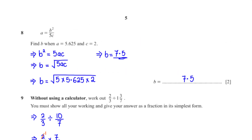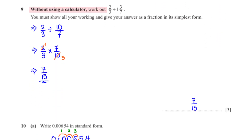A equals b squared over 5c. Find b when a equals 5.625 and c equals 2. First, rearrange to make b the subject: multiply both sides by 5c, then take the square root of both sides, giving b equals the square root of 5ac. After substituting the values of a and c, we get b equals 7.5.